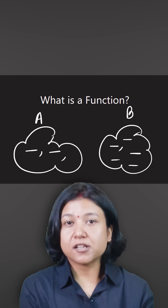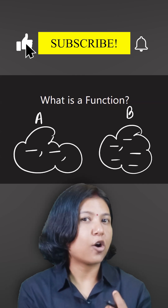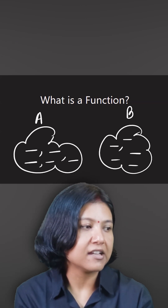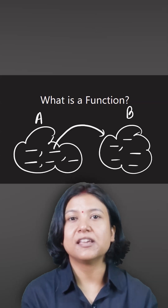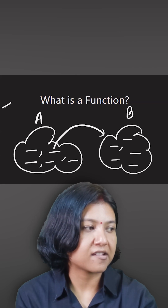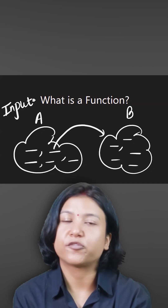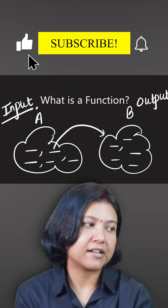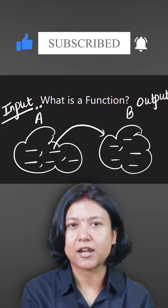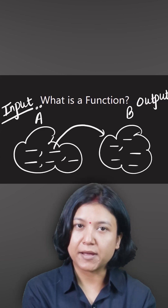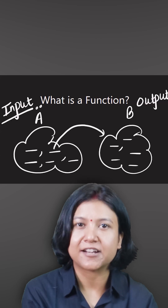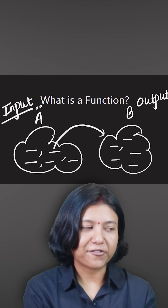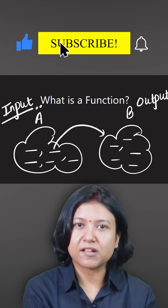But when does this become a function? A function is a relation, but only when every element in the first set has one image — one value in set B that it has a connection with. If A is the set of all input values, then B is the set of all output values. A relation can be called a function only when for all inputs, there is one and only one output. One input cannot have two outputs — that is when the definition of function is rejected. So for every input, you must have one and only one output.